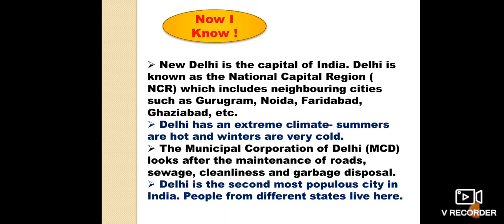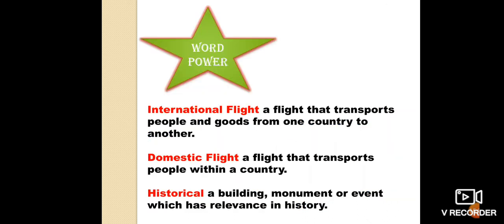To summarize: New Delhi is the capital of India. Delhi is known as the National Capital Region, NCR, which includes neighboring cities such as Gurugram, Noida, Faridabad, and Ghaziabad. Delhi has an extreme climate — hot summers and very cold winters. The Municipal Corporation of Delhi looks after roads, sewage, cleanliness, and garbage disposal. Delhi is the second most popular city in India. Key terms: international flight — a flight transporting people and goods from one country to another; domestic flight — a flight within a country; historical — a building, monument, or event relevant in history.